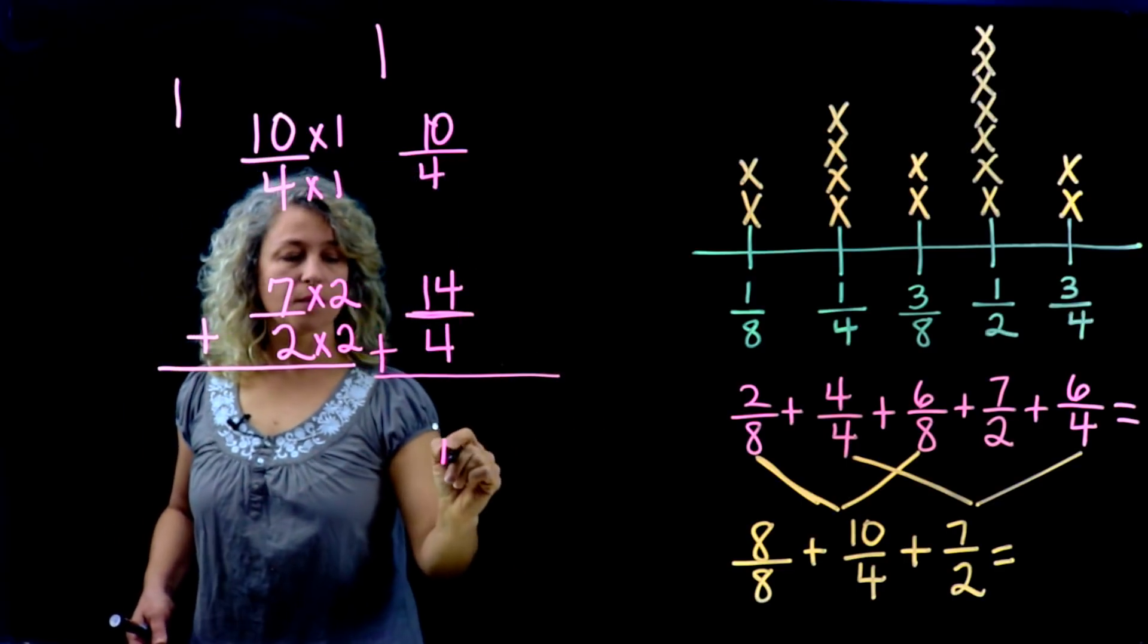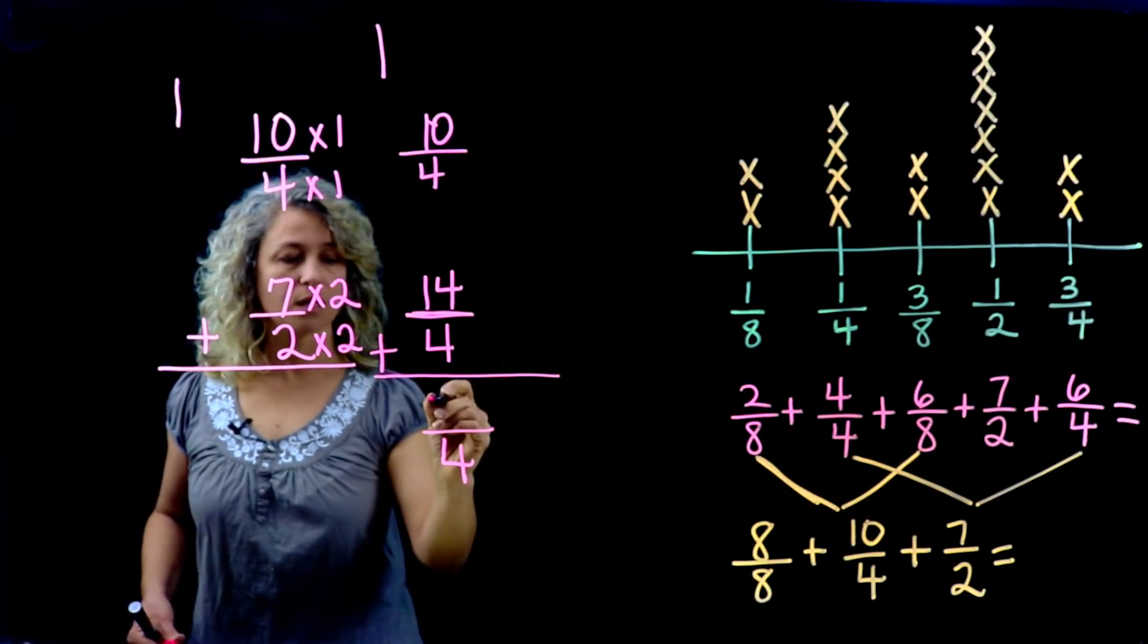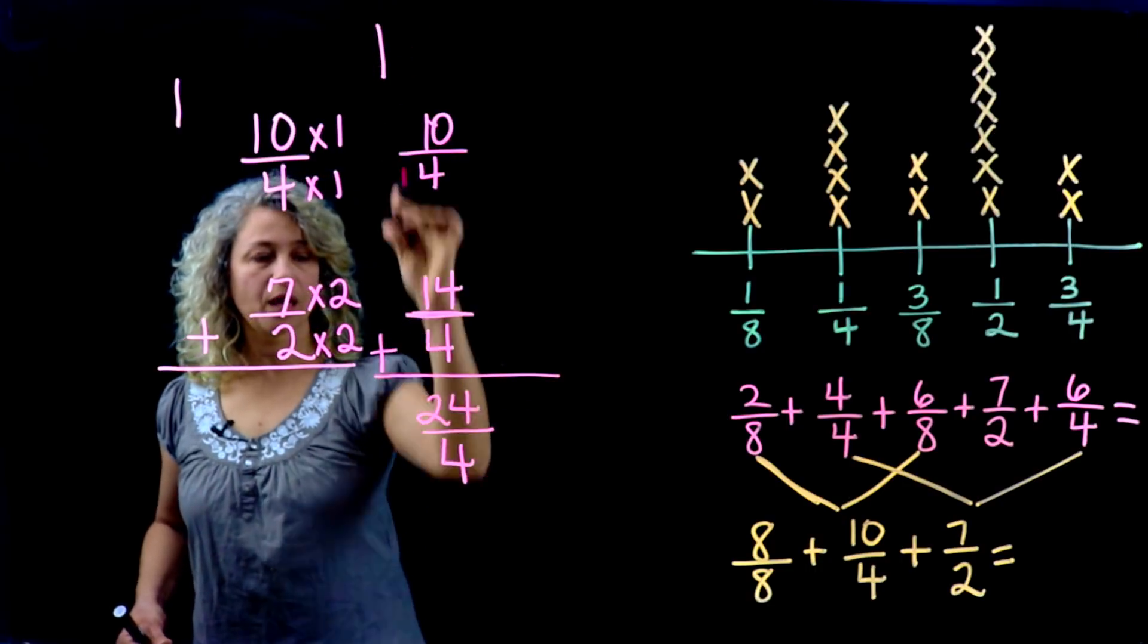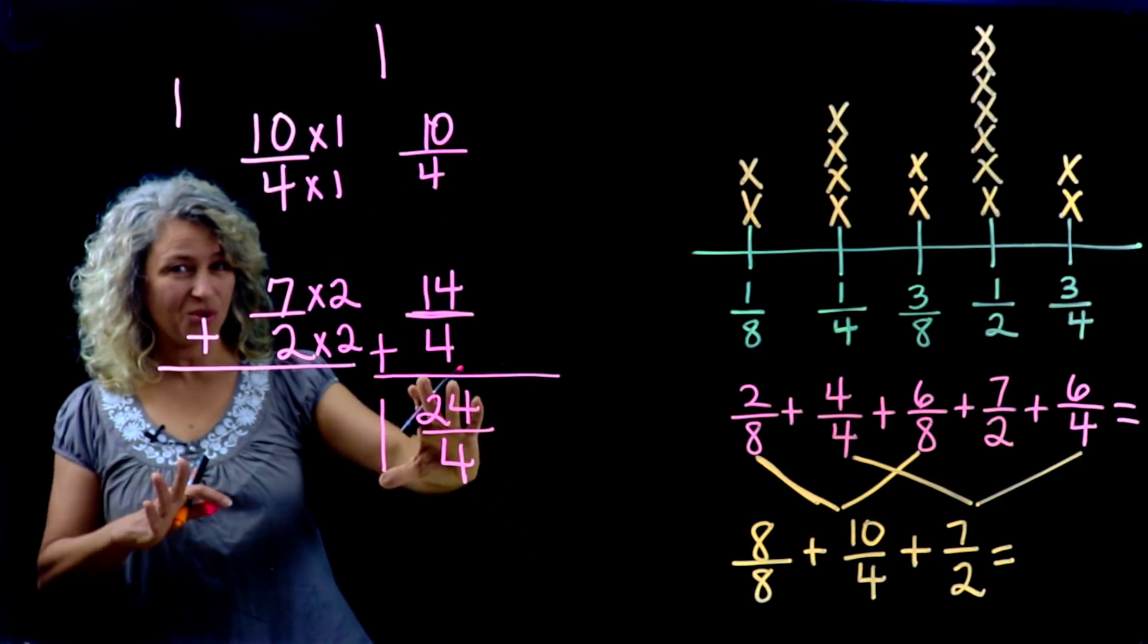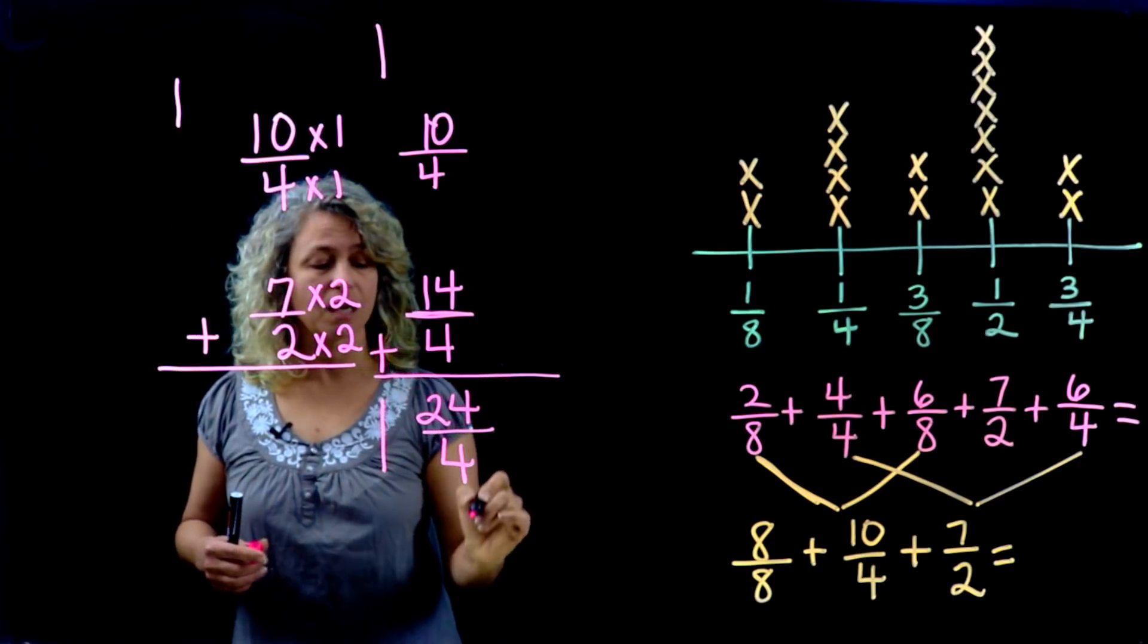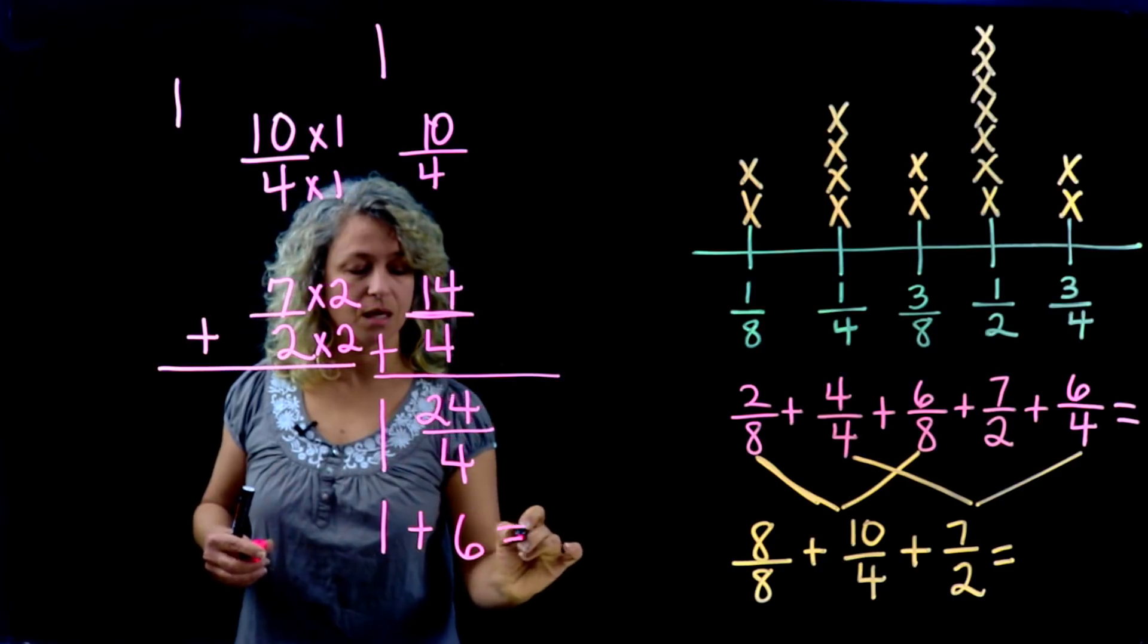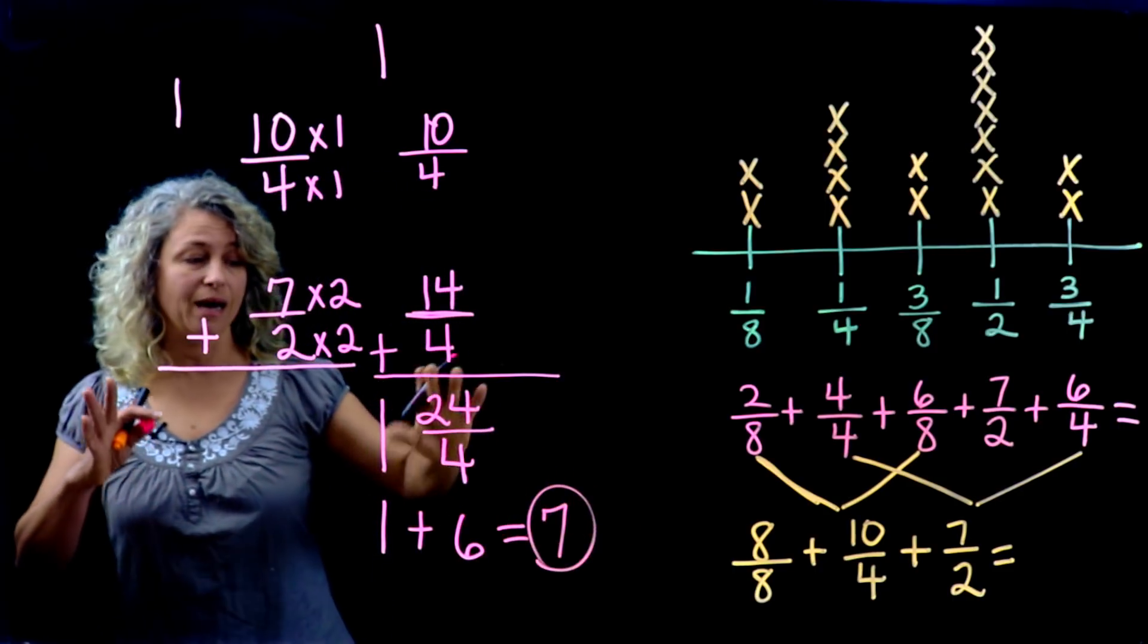Move this over and don't forget that we're adding the one as well. Now when we add, the denominator stays the same. Fourteen plus ten is twenty-four, so we have twenty-four fourths, and then we have one whole. Twenty-four fourths means twenty-four divided by four. Twenty-four divided by four is six, so we have one plus six equals seven.